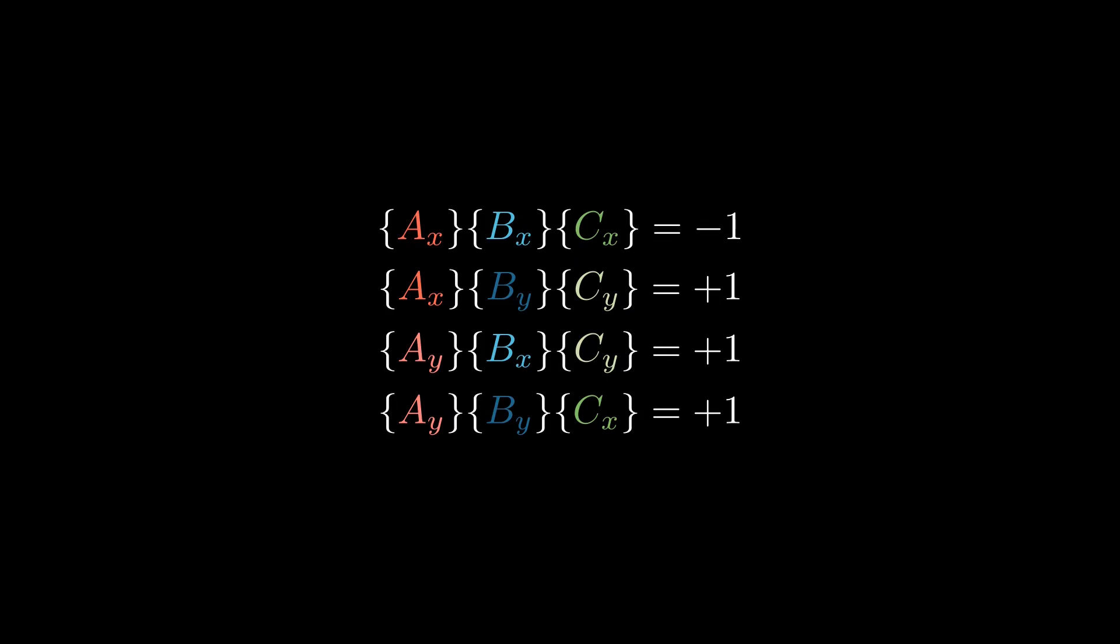So even if you are doing the XXX measurement, if you assume value definiteness, then that would mean that you're assuming that the value of AY is defined even if you don't know what it is, even if you never find out what it is.